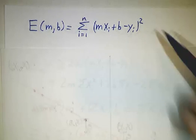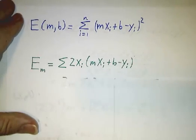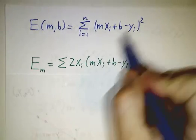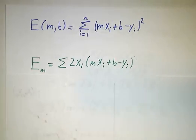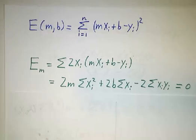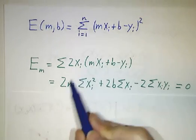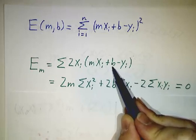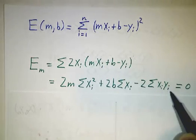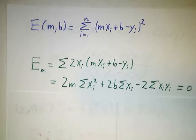So the derivative with respect to m and b, well that's, you just use the chain rule. Derivative of something squared is twice that something times the derivative of what's inside. And so if you expand that out, it's 2m times the sum of xi squared, plus 2b times the sum of xi's, minus the sum of the xi yi's.